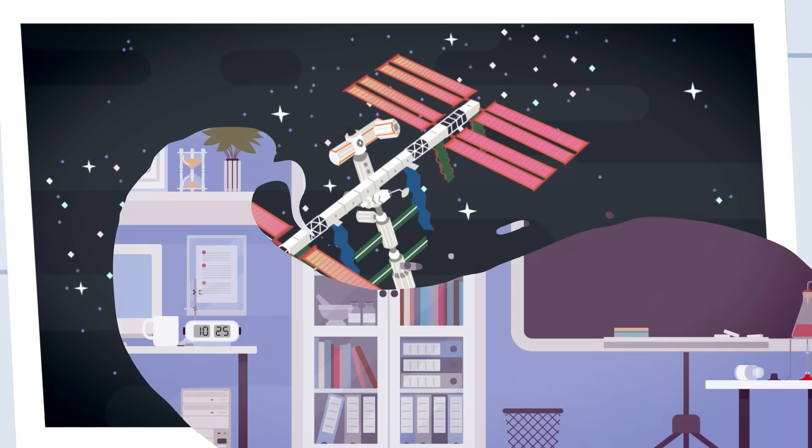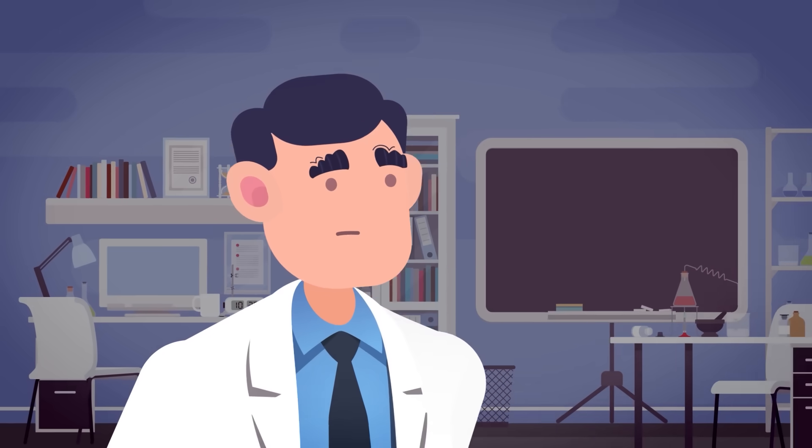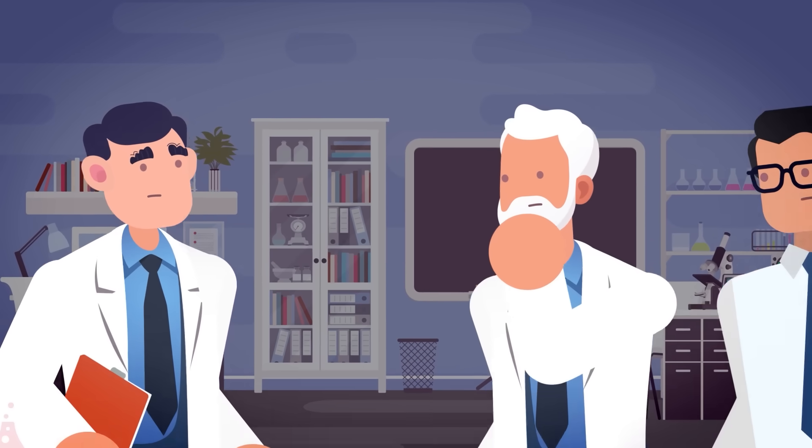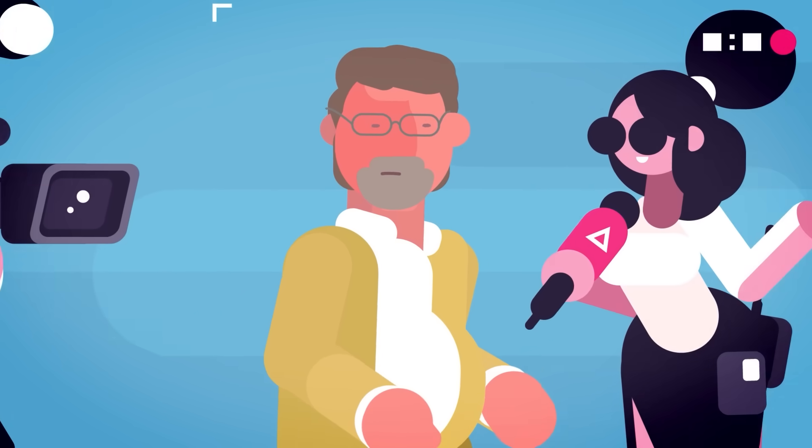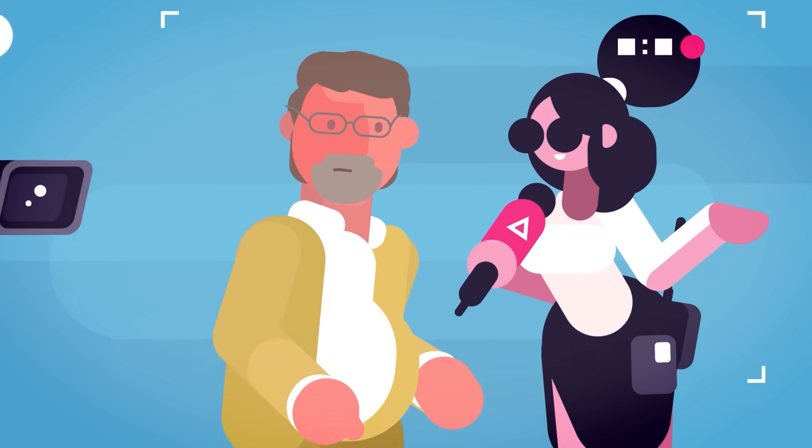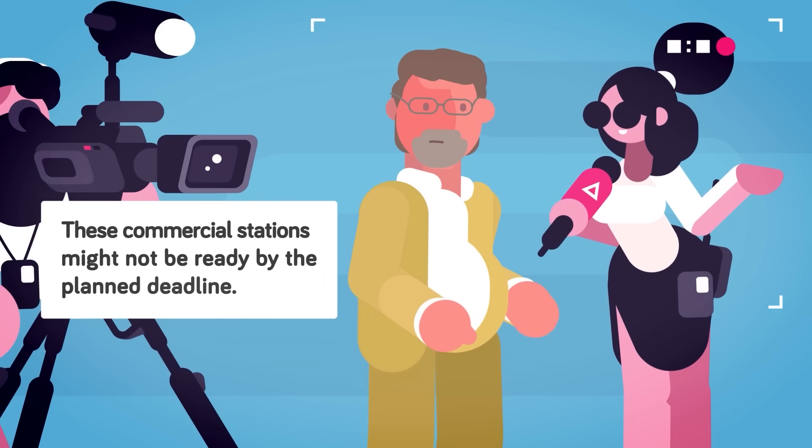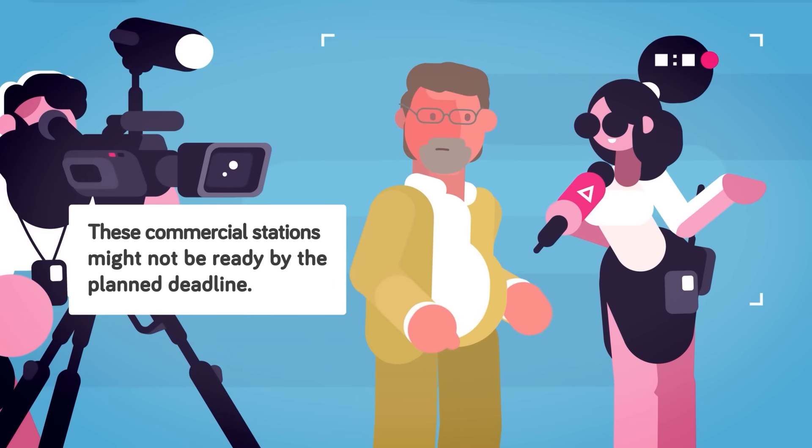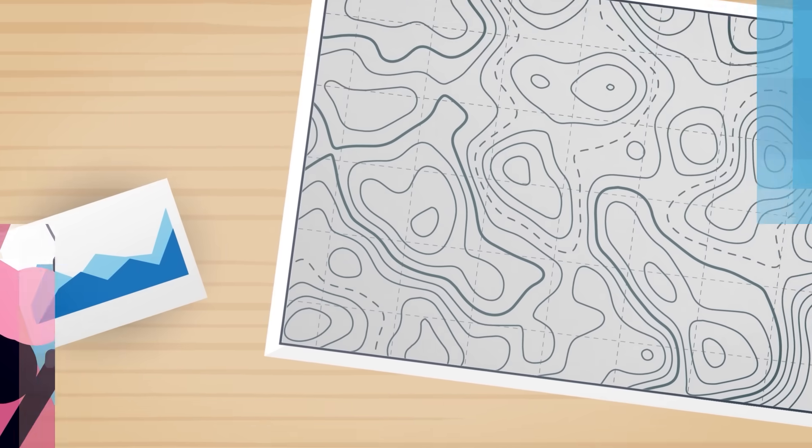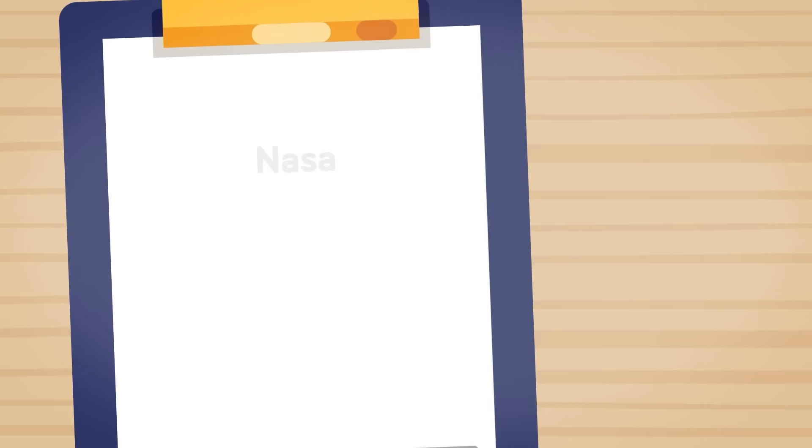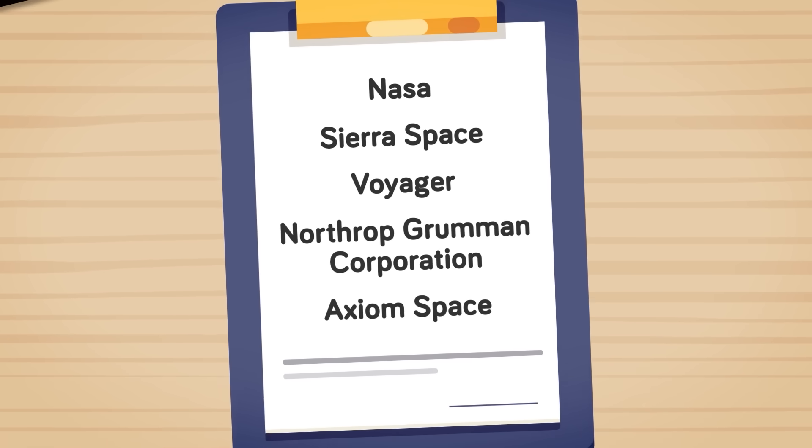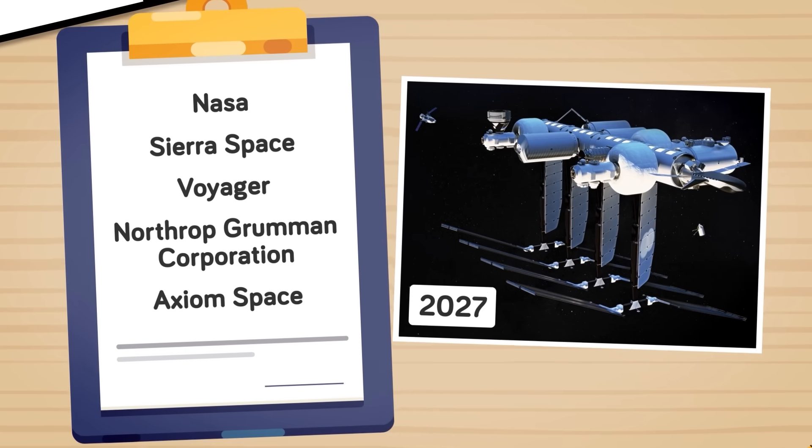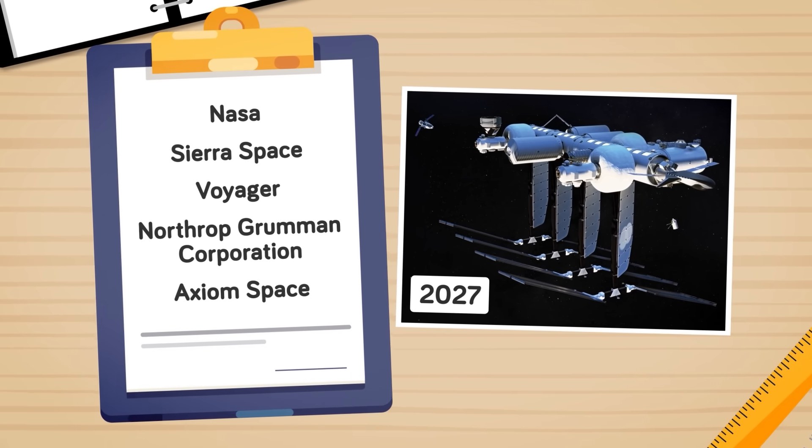Now it all seems promising, but the talks of transitioning to commercial space stations by the close of the decade have not been met with only support. NASA safety advisors and inspector general have criticized the short timeline, warning that these commercial stations might not be ready by the planned deadline. However, representatives from both NASA and the four companies involved in developing these stations disagree with those concerns. They are all making great progress according to them, and Orbital Reef plans to launch its first modules in 2027.